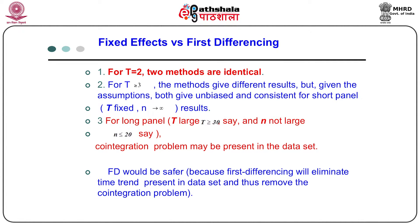In the last class, I introduced the panel data method and the fixed effect model and first difference model. Now let us make a distinction between the fixed effect and first difference model. For t equal to 2, the two methods are identical. For t greater than or equal to 3, the methods give rise to different results.